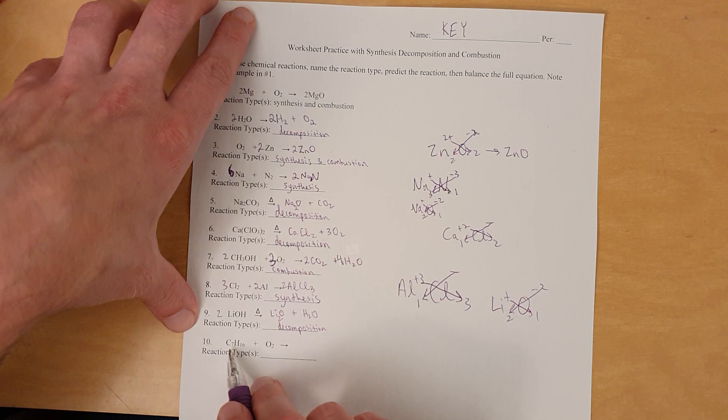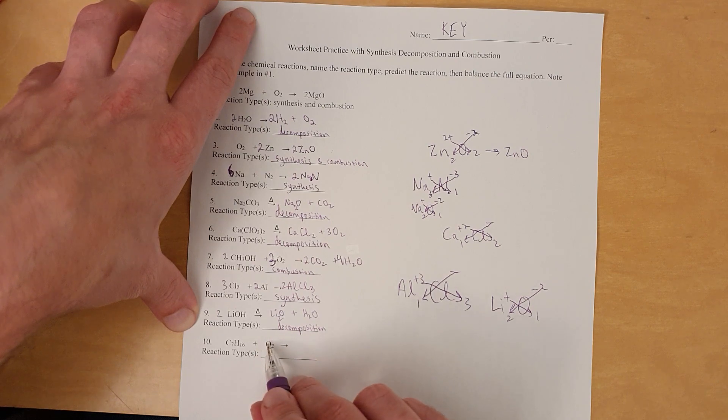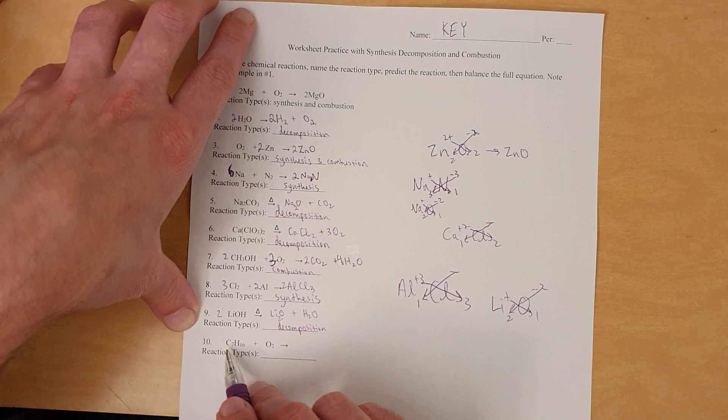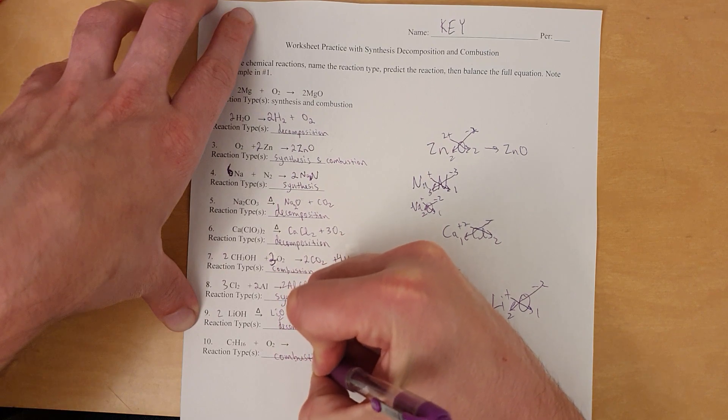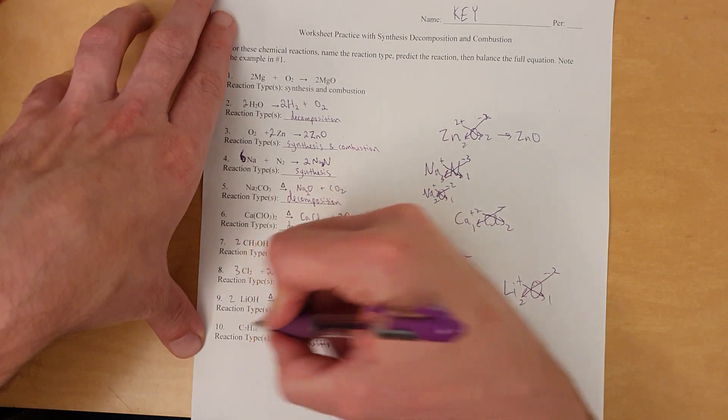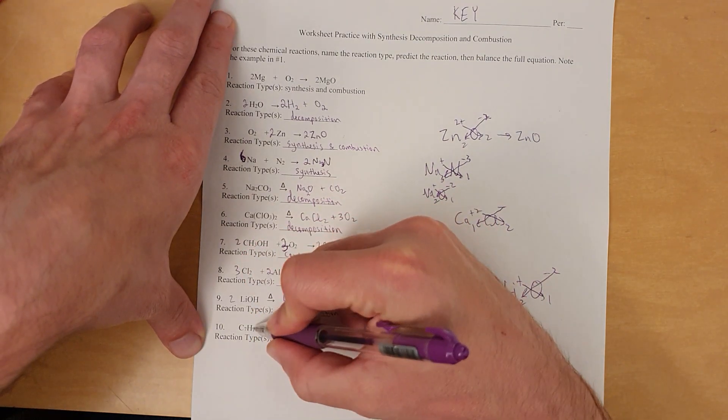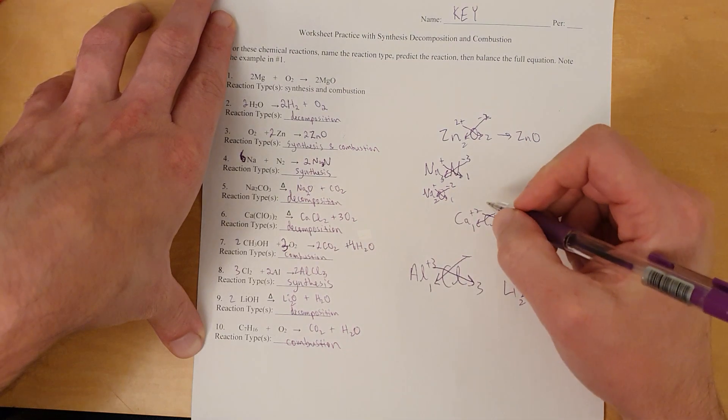Alright. Now, here we have compound reacted with an element. However, this element is oxygen. So, that's what makes this a combustion. It's because it's reacted with oxygen. And it's not synthesis because this is not a pure element. So, this is just combustion. So, it contains carbon, therefore, it produces CO2. It contains hydrogen, therefore, it produces H2O.